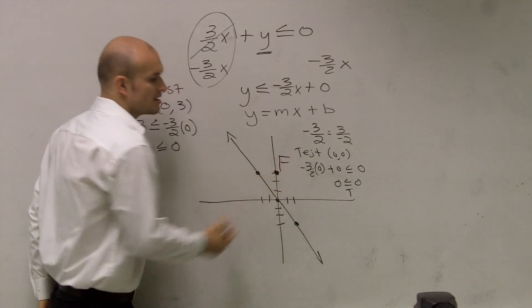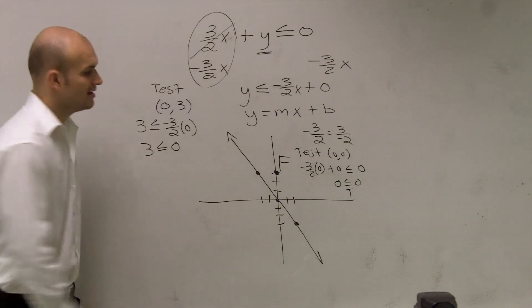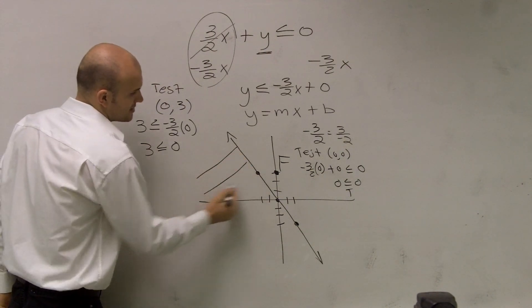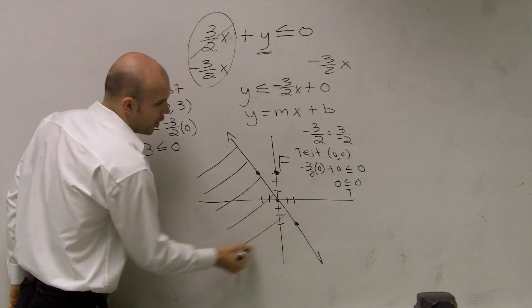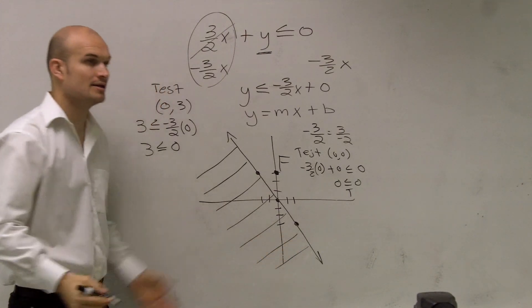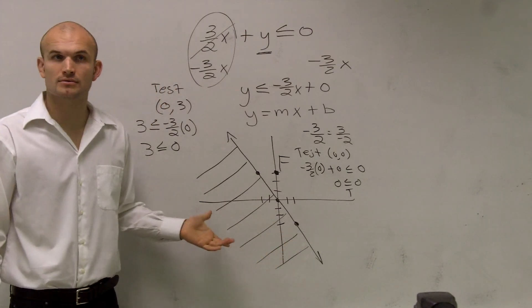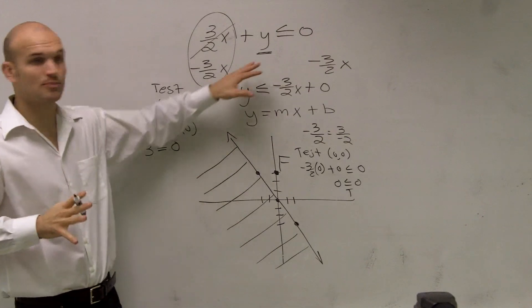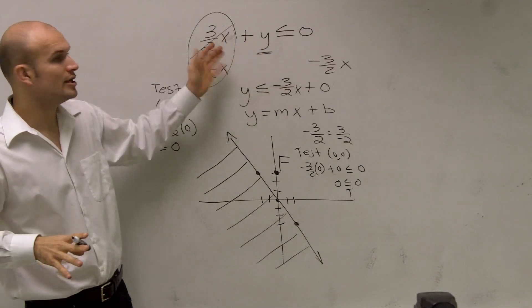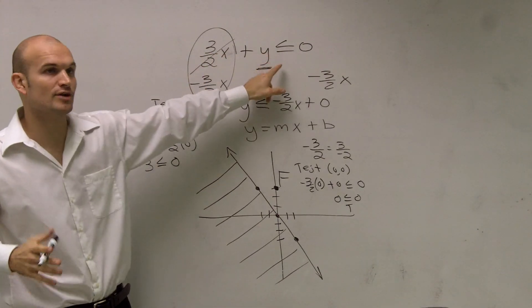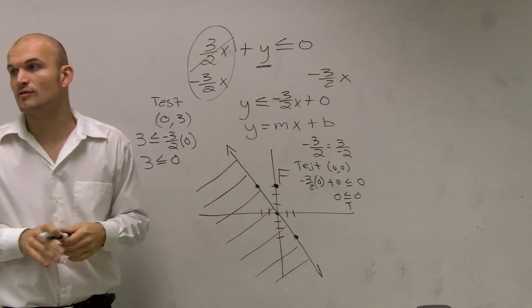Since that point's false, I'm going to make a nice big F, and I'm going to shade in the opposite direction. So that's telling me all the points that are now below the line are going to make my inequality true. Make sense? So if you guys get to your problems, you've got to make sure you solve for your variable y, and then they'll help you solve the rest of it.